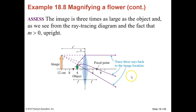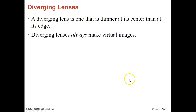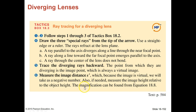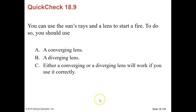A diverging lens is one that's thinner at the center than the edge, and diverging lenses always make virtual images. The image is always going to be on the same side as the object. The same rules still apply: we still have focal points on both sides — a near and a far focal point — and light going through the center of the lens is never bent. We've got special rules for drawing those, which we'll cover in class.